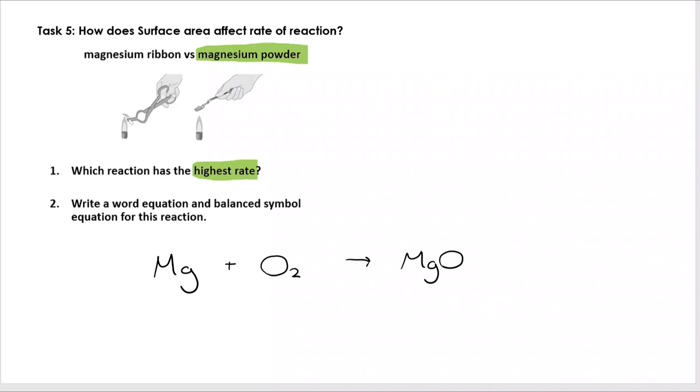I then need to balance it and I've got two oxygens on the left so I need 2 MgO on the right which means I need 2 Mg on the left. But we should always be mindful now of state symbols. Magnesium is going to be solid. Oxygen is gaseous. And magnesium oxide is also solid.